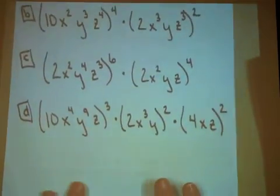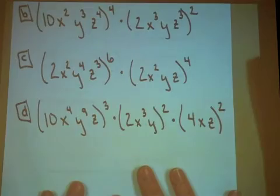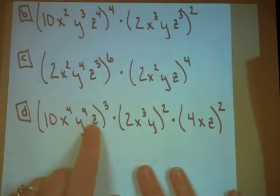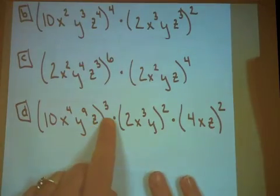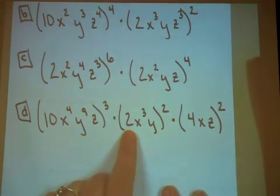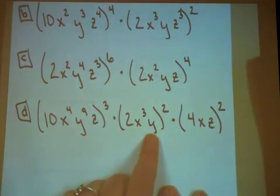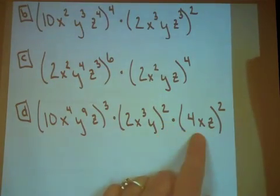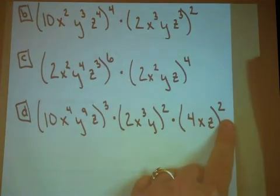And finally D, a challenge problem. 10 x to the 4th, y to the 9th, z, all of that cubed, times 2 x to the 3rd, y, all of that squared, times 4 x, z, all of that squared.